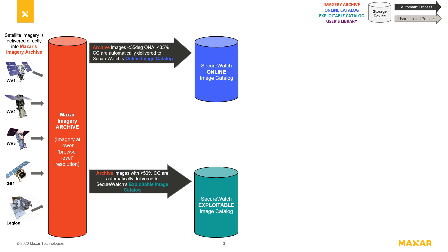Archive images that are less than 35 degrees off Nadir and have less than 35% cloud cover are automatically orthorectified using Maxar's digital elevation model and delivered to SecureWatch's online image catalog where they can be streamed at full resolution.